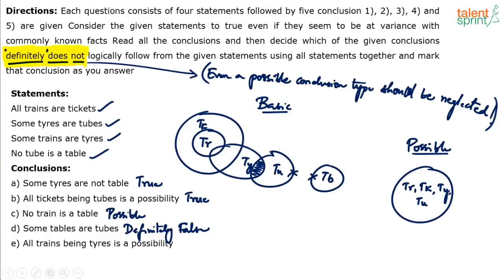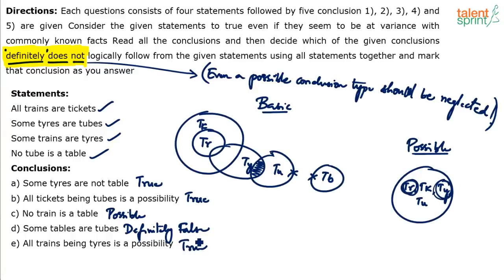Fifth conclusion: all trains being tires is a possibility. We have already discussed this — all trains being tires is a possibility. Trains and tires can be shown in the same circle. So this conclusion is also true — it is possible.